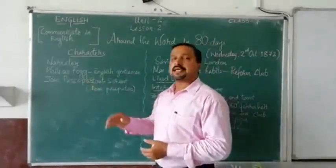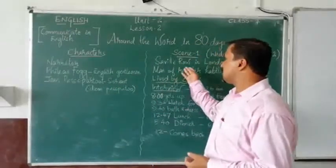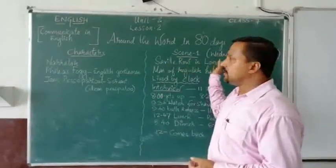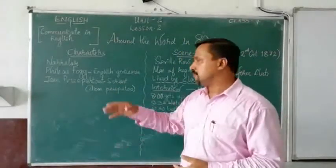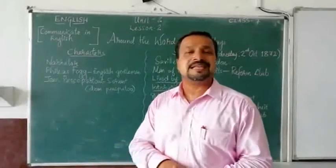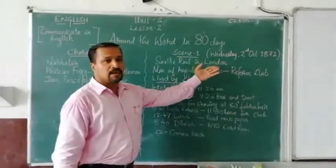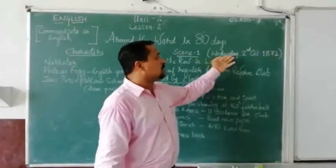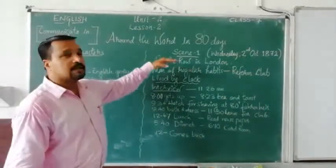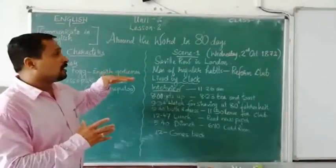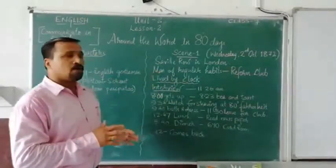There are three major characters in Scene 1: the narrator, Mr. Phileas Fogg, and Passepartout. Mr. Phileas Fogg is an English gentleman who is living in Savile Row, London. Passepartout is a French name — he is the newly appointed servant. Scene 1 is set on 2nd October 1872, a Wednesday. The background is in Savile Row, London, where a big mansion's interior is shown on stage.